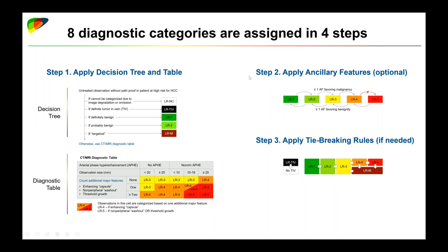Sometimes even after steps one and two, we're not sure what the final category is and are deciding between two categories. In that case, we can apply tie-breaking rules to arrive at a final answer. The final step is a quick check to make sure the category we're selecting actually makes sense. That's the algorithm approach in a nutshell.